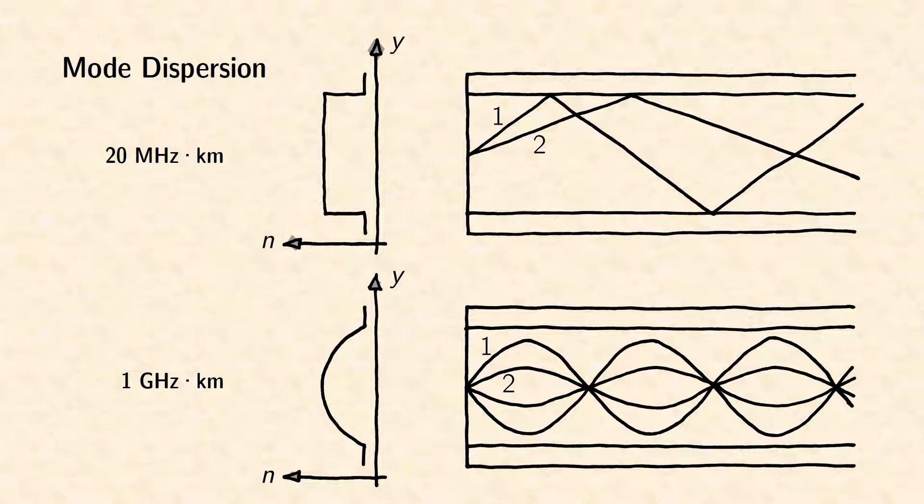However, very high data rates or long distance transmission requires single mode fibers. Optical data transmission in single mode fibers also suffers from dispersion. This kind of dispersion is called chromatic dispersion because its origin is the wavelength dependence of the refractive index.